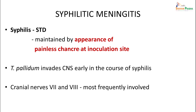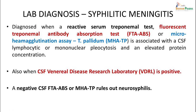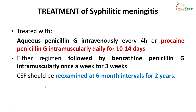Syphilitic meningitis is seen in patients with syphilis, an STD marked by a painless chancre at the inoculation site. T. pallidum invades the CNS early in the illness; cranial nerves 7 and 8 are most frequently involved. Lab diagnosis includes reactive serum treponemal test — FTA-ABS or T. pallidum haemagglutination test — associated with CSF lymphocytic or mononuclear pleocytosis and elevated protein. CSF VDRL is positive. A negative CSF FTA-ABS or MHATP rules out neurosyphilis. Treatment is aqueous penicillin G IV every 4 hours or procaine penicillin G IM daily for 10–14 days, followed by benzathine penicillin G IM once weekly for 3 weeks; CSF should be re-examined at 6-month intervals for 2 years.